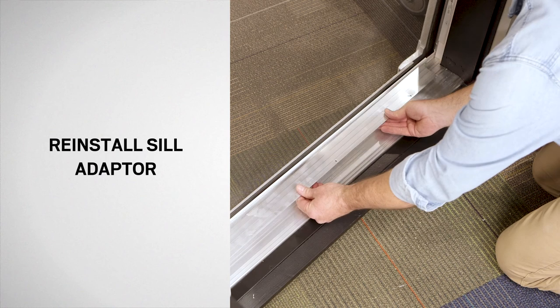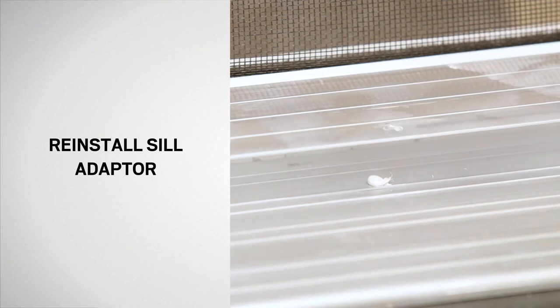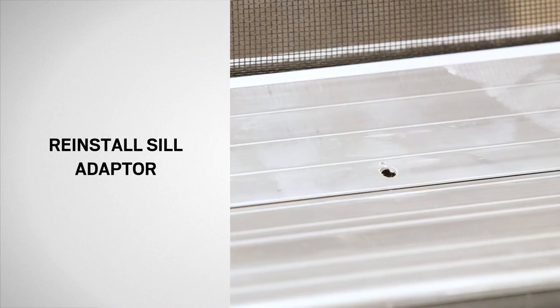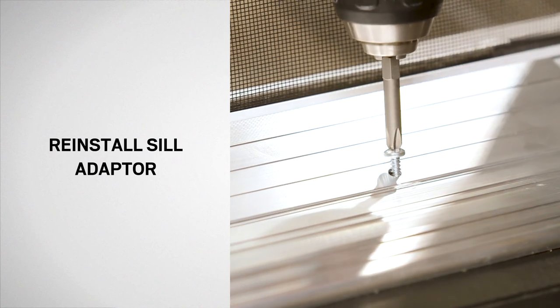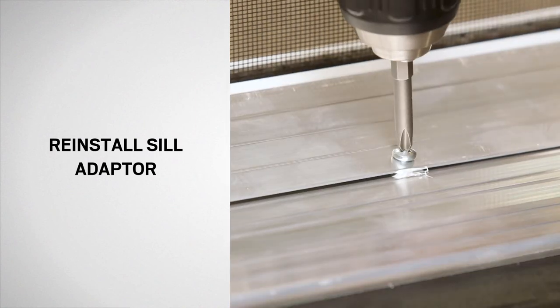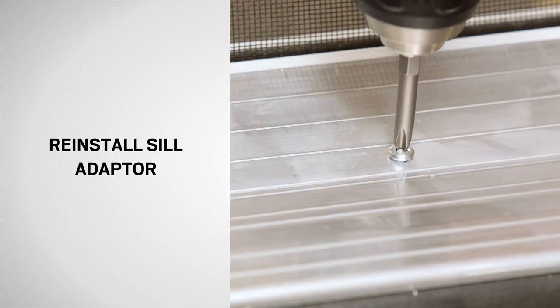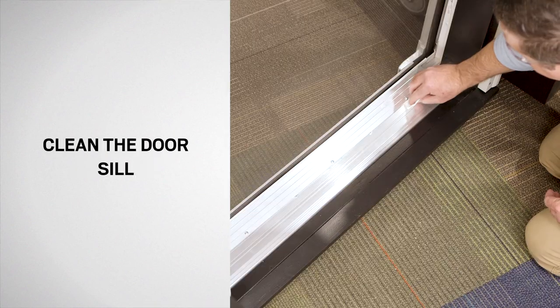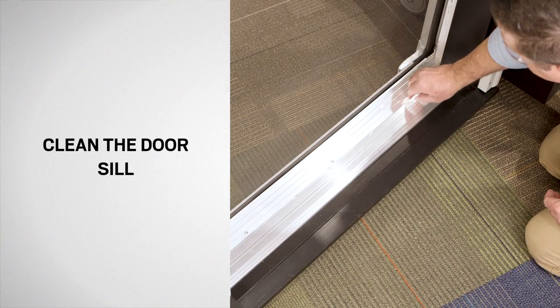Insert the sill adapter and rotate it down to the door sill. Fasten using the previously removed screws. Remove any excess sealant using a clean damp cloth.